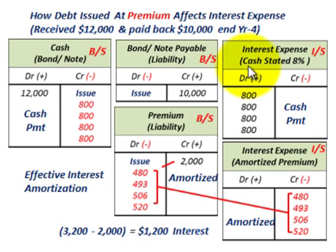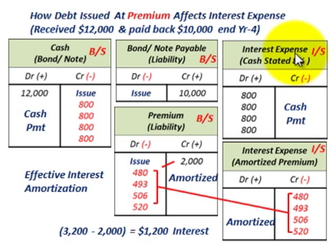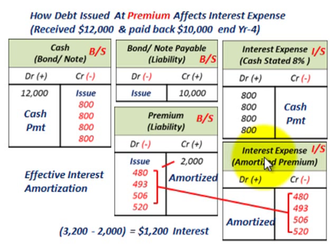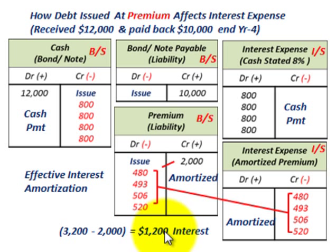Based on the cash stated rate of interest, we'd credit or reduce our cash account by the $800 interest payment each period, and the debit goes to interest expense — so $800 interest expense per year based on the cash payment, for total cash payments of $3,200. But because the note was issued at a premium, we reduce our interest expense by the amortized amount each period. So our effective net interest expense is $3,200 cash less the $2,000 amortized amount, giving us $1,200 net interest expense.